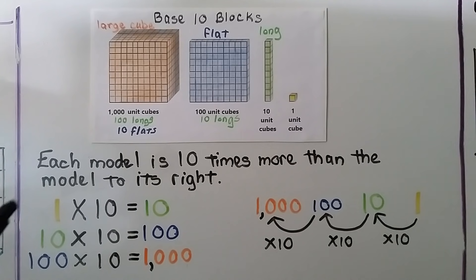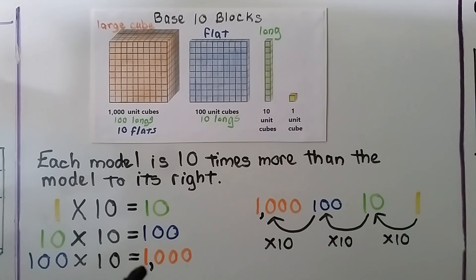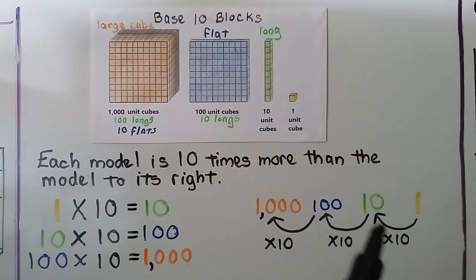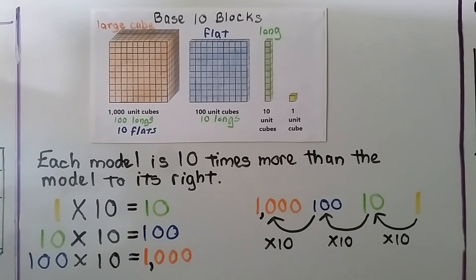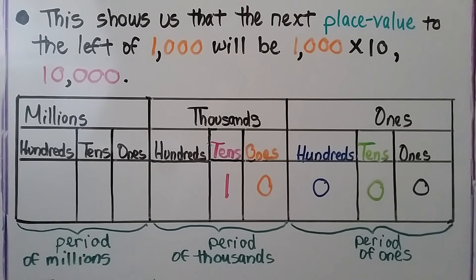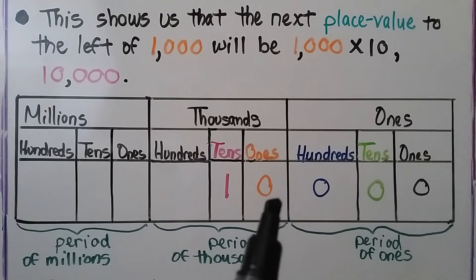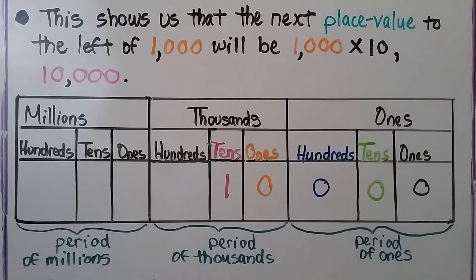One times ten equals ten. Ten times ten equals one hundred. One hundred times ten equals one thousand. As we move to the left, it's ten times more than the one to the right — we're going times ten, times ten, times ten. This shows us that the next place value to the left of one thousand will be ten times more, so it will be ten thousand.